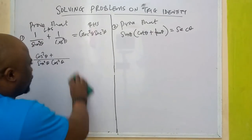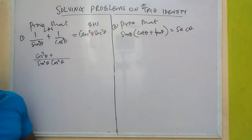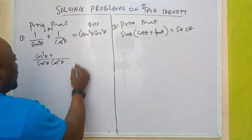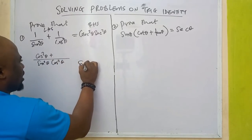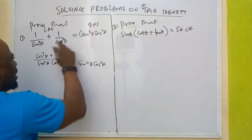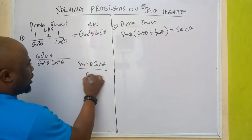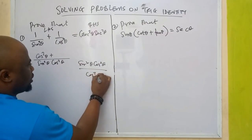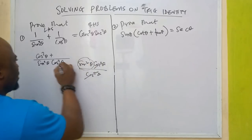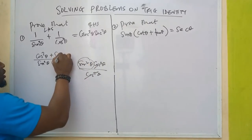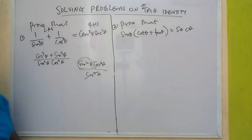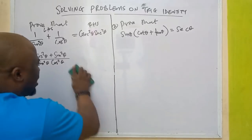For the second part, we have cos²θ divided by cos²θ — that cancels — and we are left with sine²θ. So that's the second step: we are going to have our fraction result.